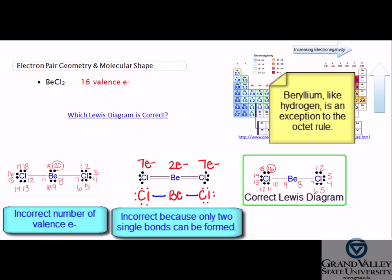Beryllium, like hydrogen, is an exception to the octet rule and typically has four electrons around it when we draw the Lewis diagram.